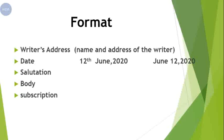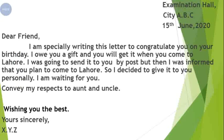After the date, we write the salutation. Salutation is a way of addressing the person you are writing the letter to — jis ko aap letter likh rahe hain, us ko muhatib karne ka tariqa. If we are writing to family members, the salutation is different. If we are writing to friends, strangers, or teachers, the way of salutation is different. Then comes the body, which has the main message of the letter. At the end we write the subscription, which is also called the ending, and it is also written according to your addressee.